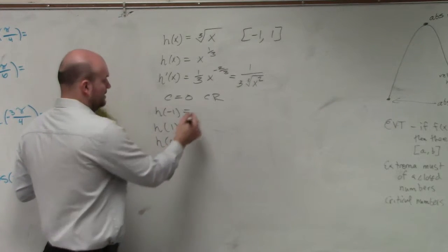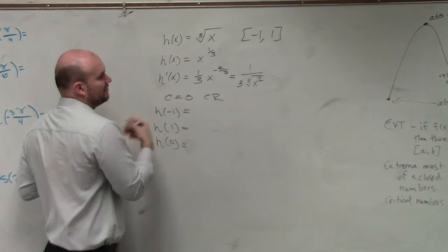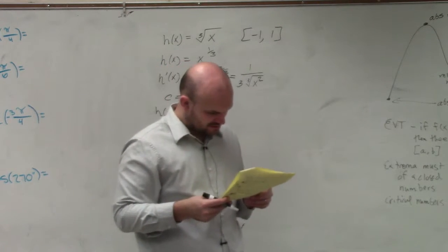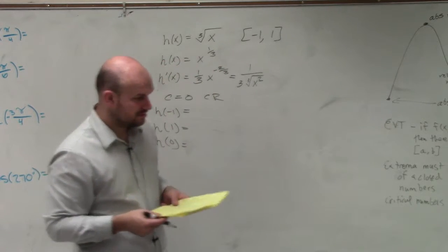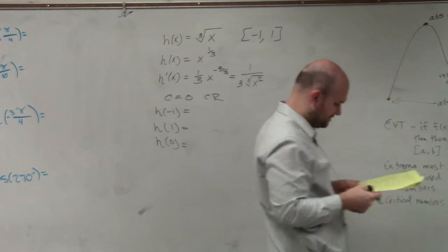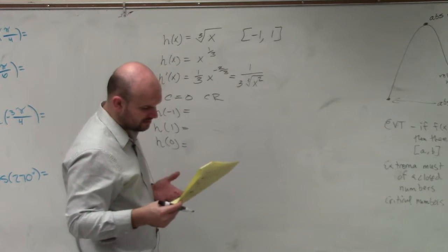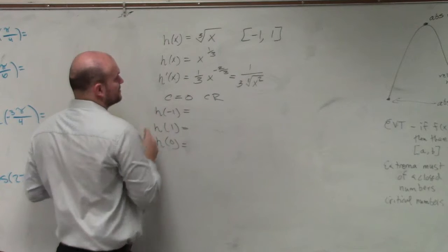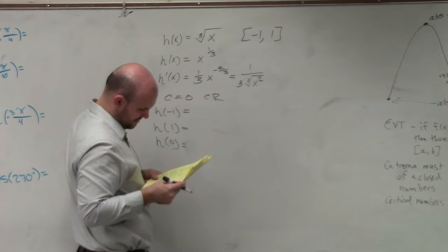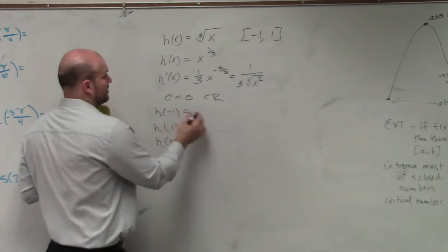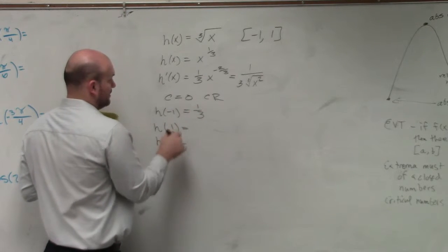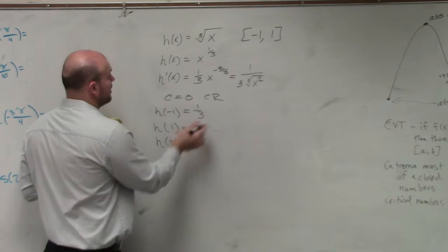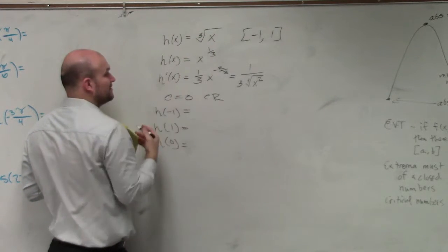So h of negative 1. You just plug in negative 1 squared, cube root. [Working through calculation] Plug it back into your function, right?